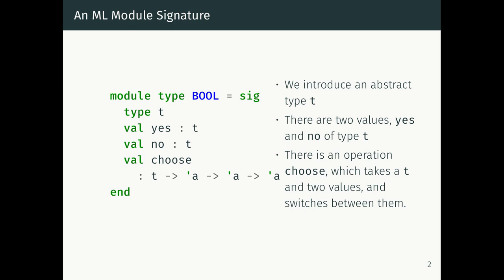You return the first argument if the boolean is yes, and you return the second one if the abstract boolean is no. This is the primitive interface for booleans, and it looks quite a bit like the Church encoding that we saw for booleans in the last lecture — and that's not an accident, as we'll see in a minute.